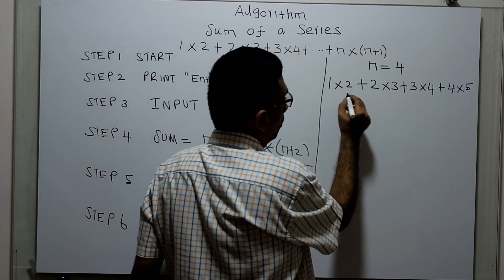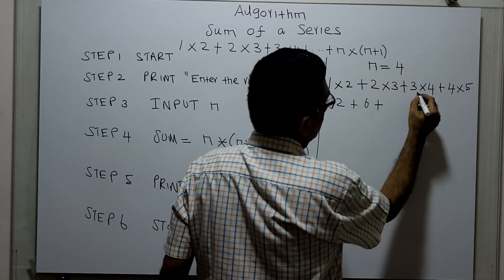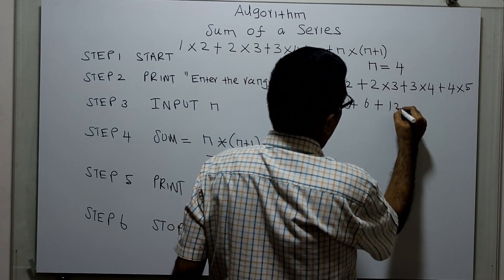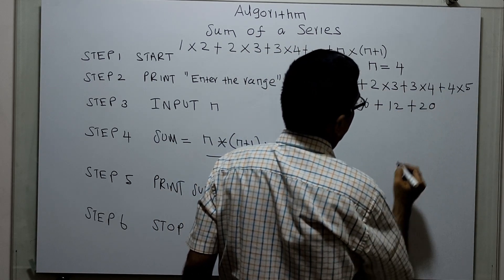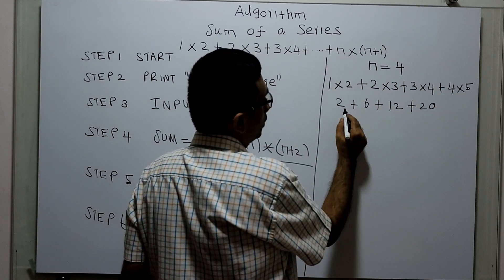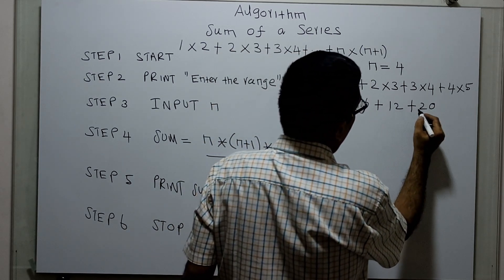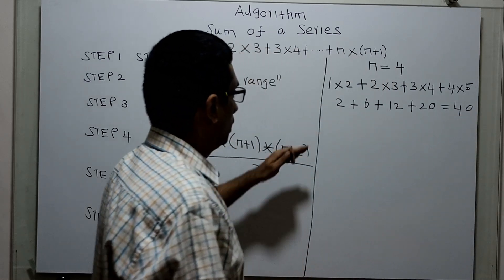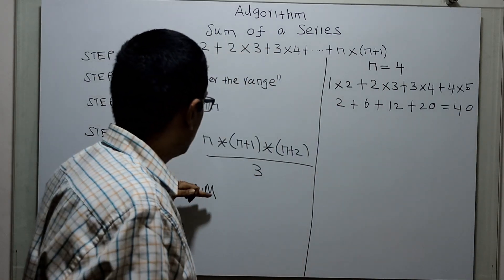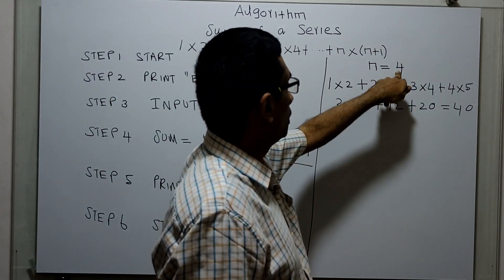1×2 is 2, plus 2×3 is 6, plus 3×4 is 12, plus 4×5 is 20. 2 + 6 is 8, 8 + 12 is 20, 20 + 20 equals 40. We will check whether the algorithm is producing 40 for the input 4.